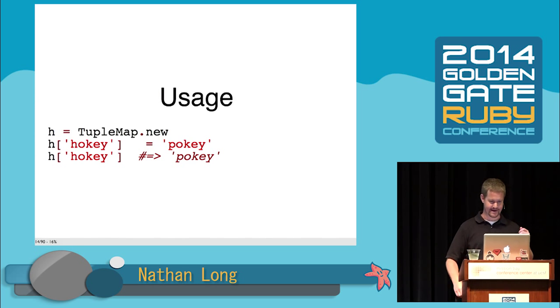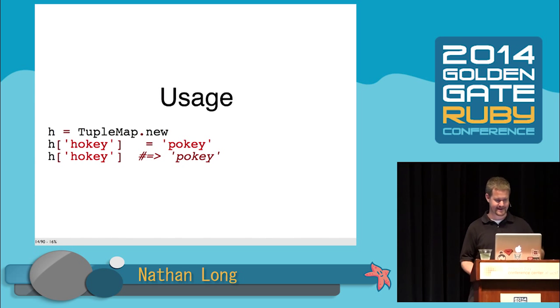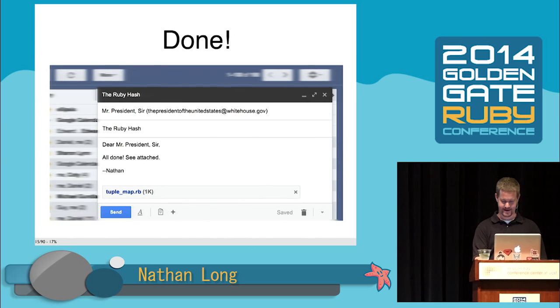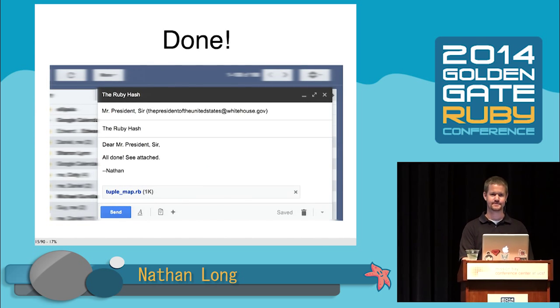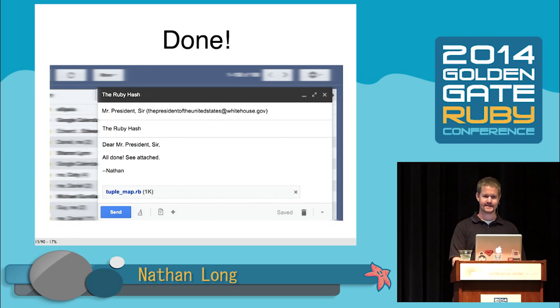I insert the key 'hokey' with the value 'pokey,' and I get it back out, and everything is good. So I attached that to an email, sent it off to the president. I was feeling very fine, and everything was great.